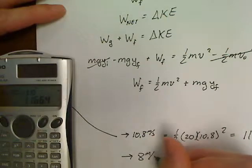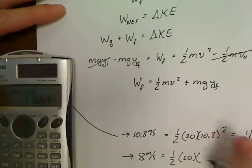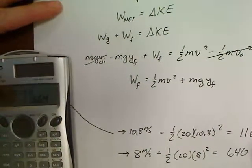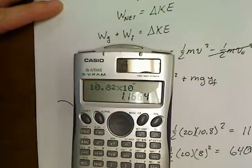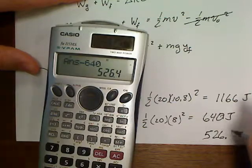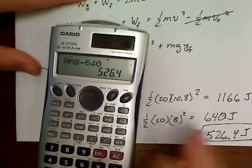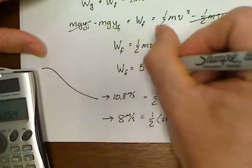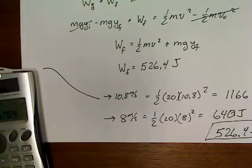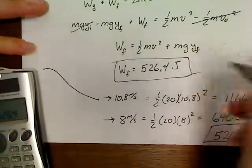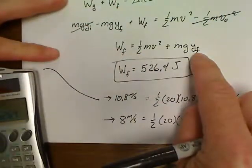Half of 20 is 10, and 8 squared is 64, so 64 times 10 is 640 joules. Subtracting: 1166.4 minus 640 equals 526.4 joules lost. That means work done by friction is 526.4 joules. We're able to get the same answer using either method.